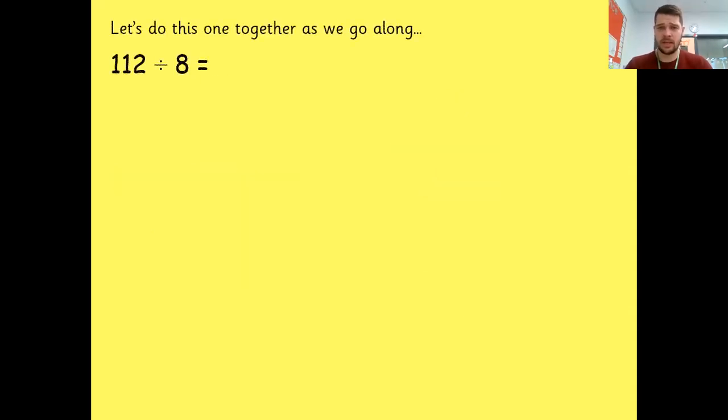Let's do this one together. 112 divided by eight. So 112 and eight. Again, I know that 10 times eight isn't going to be more than that. So I'm going to start with that. This time, the column subtraction is a bit difficult. So don't forget to exchange. Two take away zero is still two, but one take away eight. Can I do that?